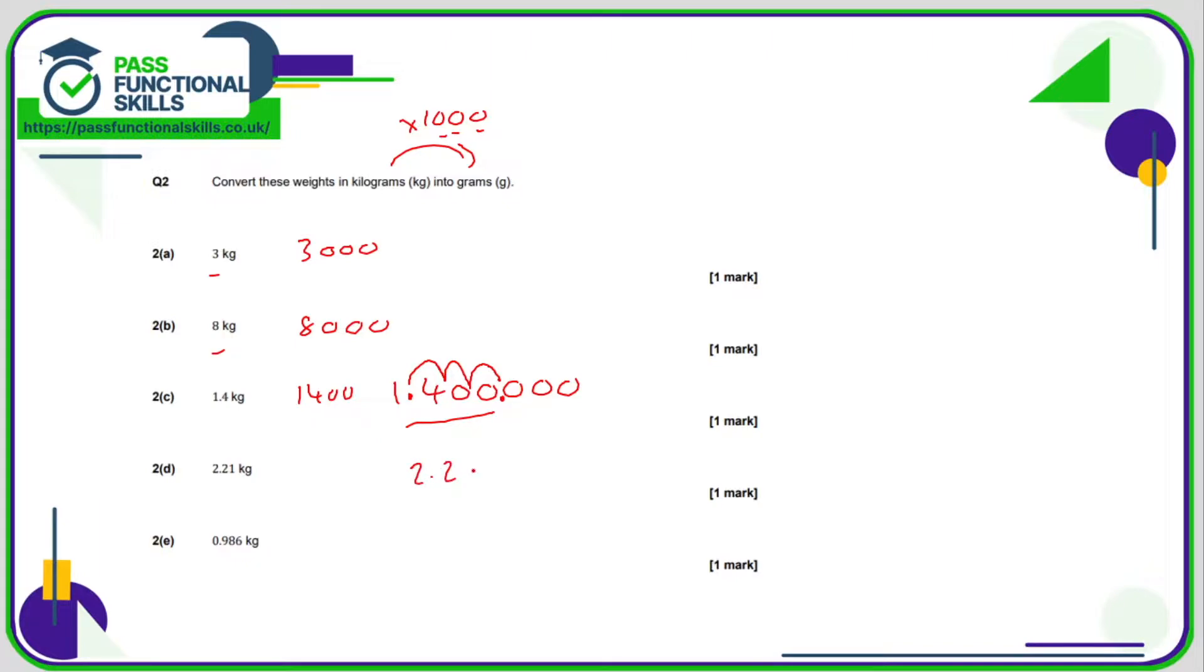2.21. I'm going to write as 2.21 with an arbitrary number of zeros after it. Move the decimal point one to three positions. So the answer is 2,210.